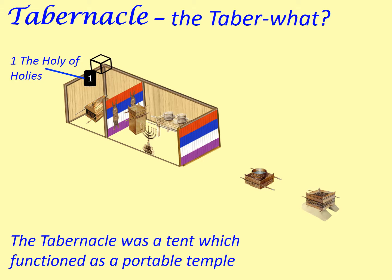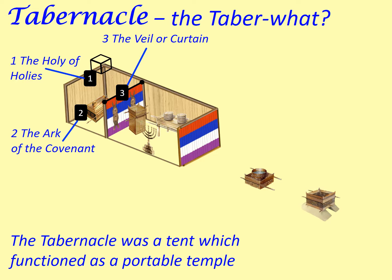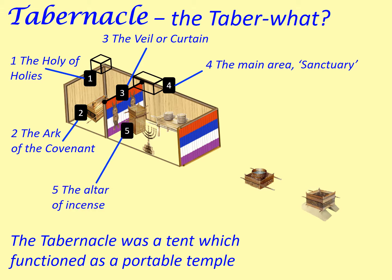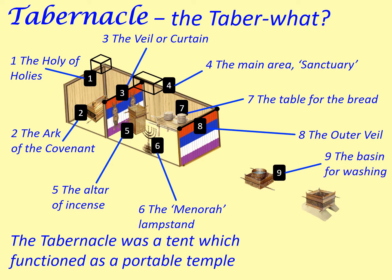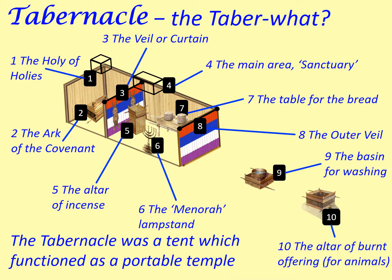The tabernacle's main components: 1. The Holy of Holies. 2. The Ark of the Covenant. 3. The Veil or Curtain. 4. The Main Area, Sanctuary. 5. The Altar of Incense. 6. The Menorah Lamp Stand. 7. The Table for the Bread. 8. The Outer Veil. 9. The Basin for Washing. 10. The Altar of Burnt Offering.